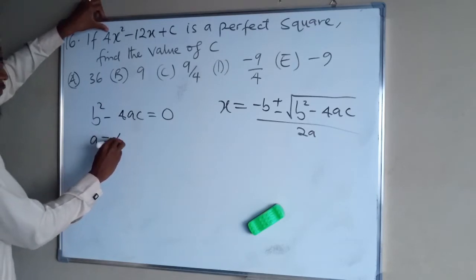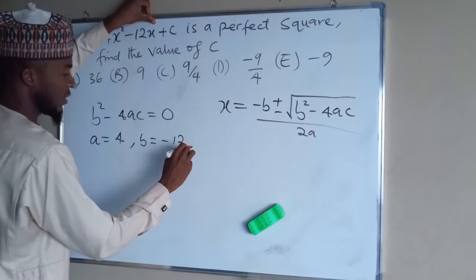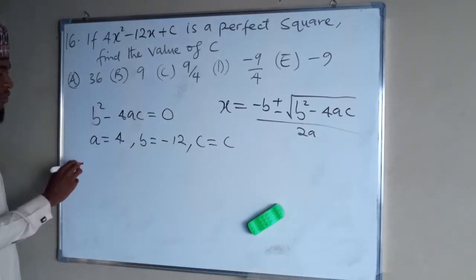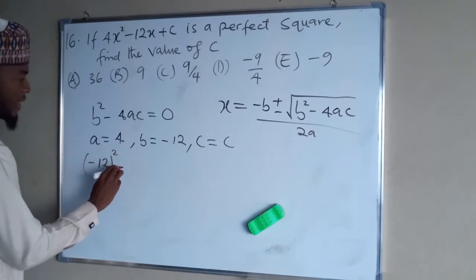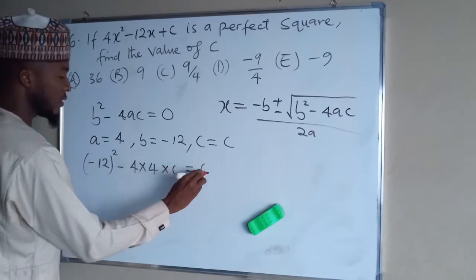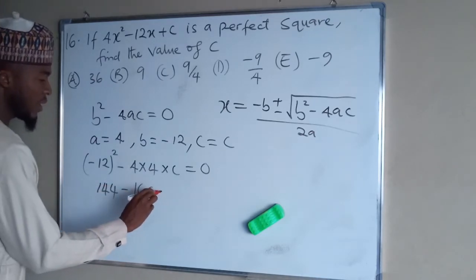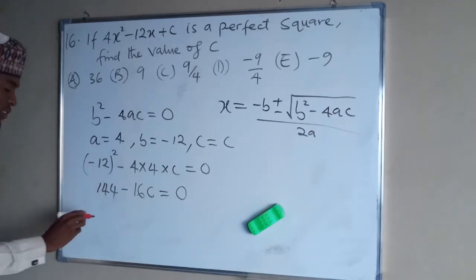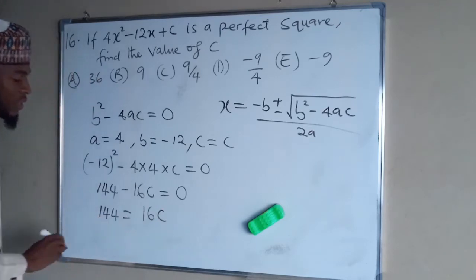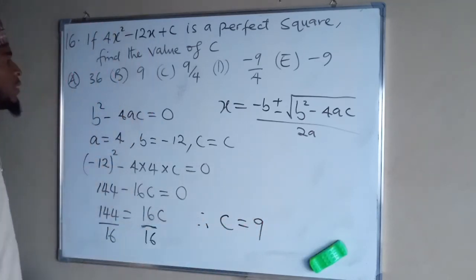For this equation, a equals 4 (the coefficient of x squared), b equals minus 12 (the middle term coefficient), and c remains c. Substituting into b² minus 4ac = 0: (−12)² minus 4 times 4 times c equals 0, giving 144 minus 16c = 0. Taking 16c to the right: 144 = 16c. Dividing both sides by 16, c equals 9, which is option B.